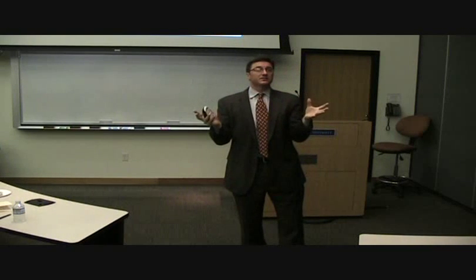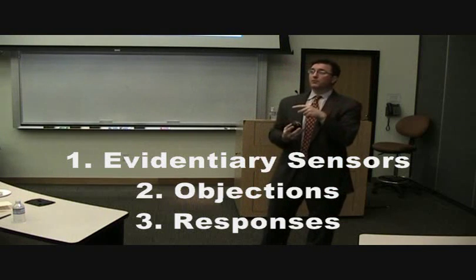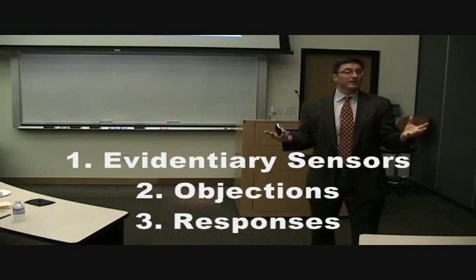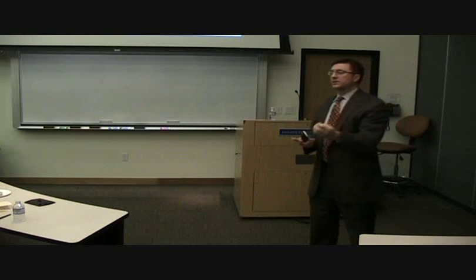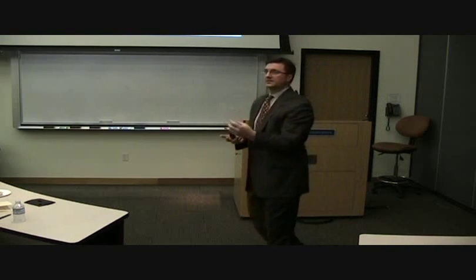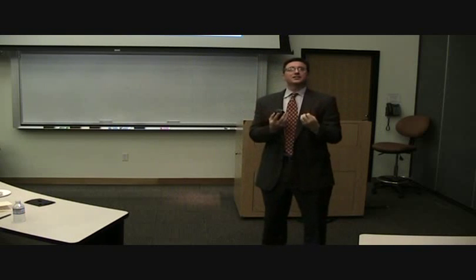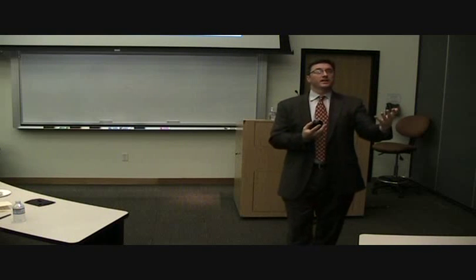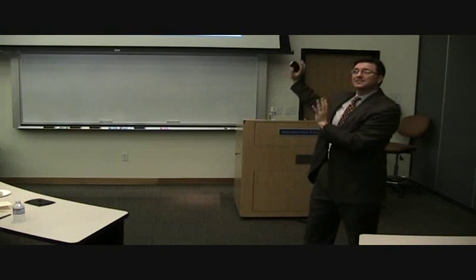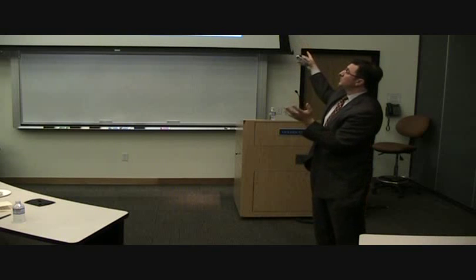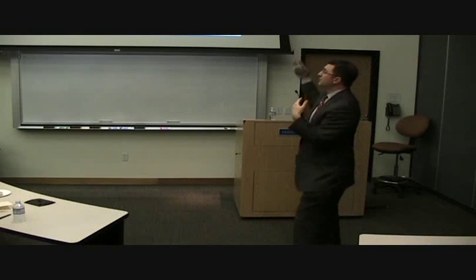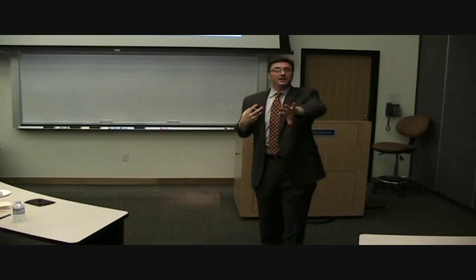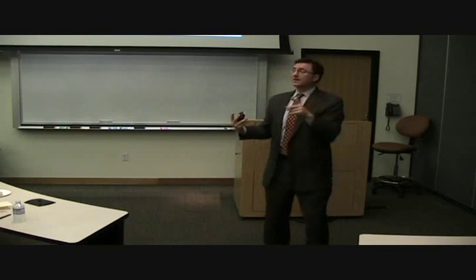The first I call evidentiary sensors. It's your preparation as an opponent to know where your opposing side is going. Where is the proponent going with these questions? Where are they going by putting in this exhibit? What is this whole presentation about? And knowing where they're going, you can know what objections might come up. This is trial strategy, this is the planning that goes on. The next one for the opponent is the objection. Then for the proponent — the one asking the questions, the one putting on the evidence, the one putting in an exhibit — they must respond.